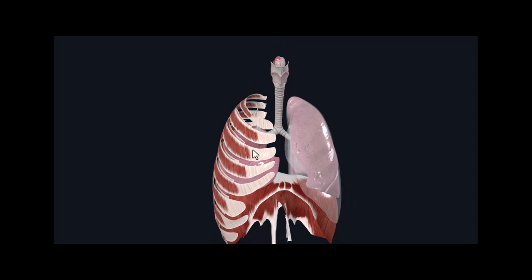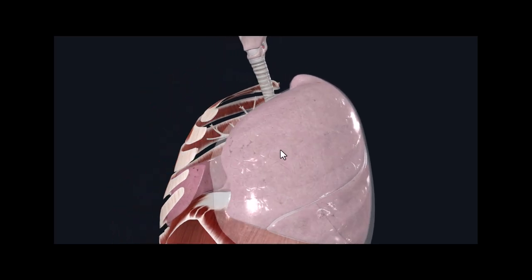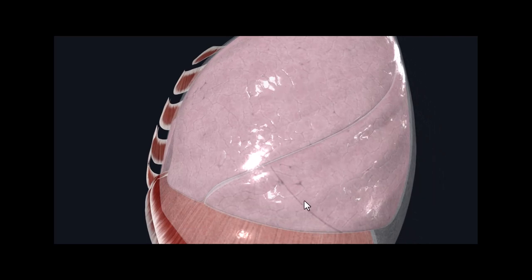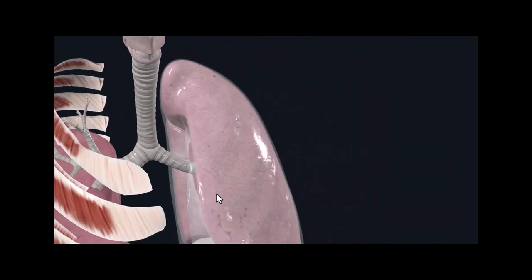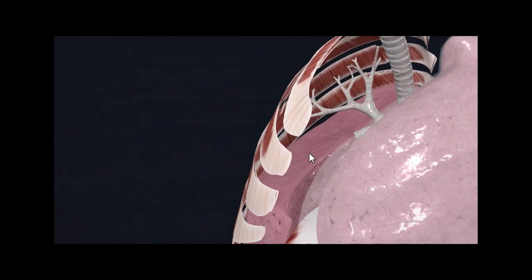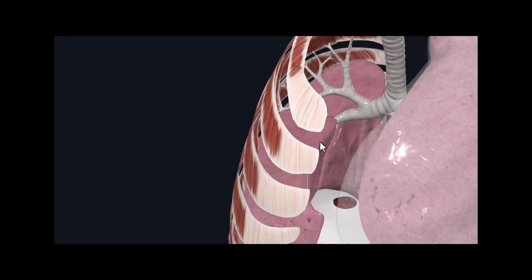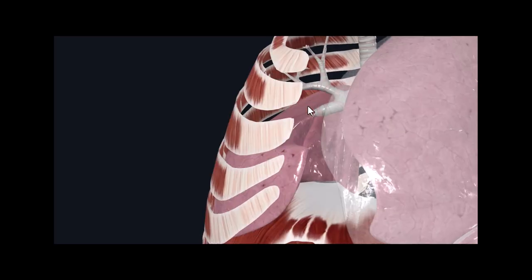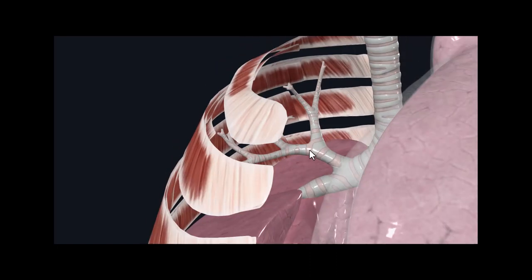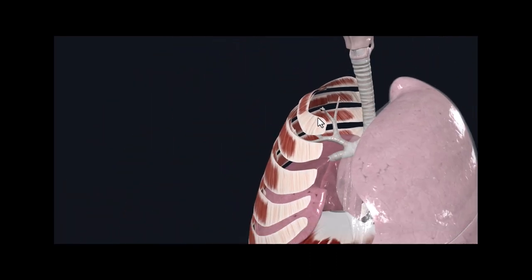Each lung is separated into different parts. The left lung is separated into two parts, as you can see here: there is the superior lobe and the inferior lobe. The right lung is a bit different because here you have three different sections. For the right lung you will have three different lobes: the superior lobe, the middle lobe, and the inferior lobe.